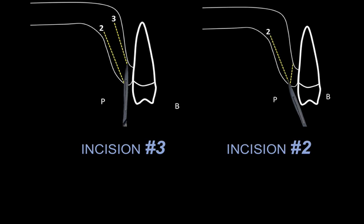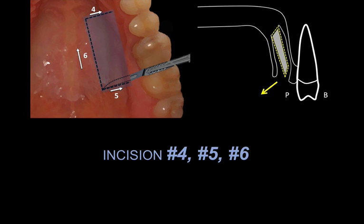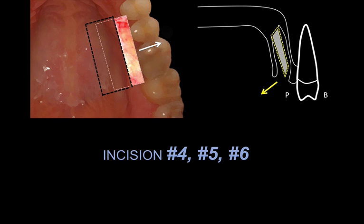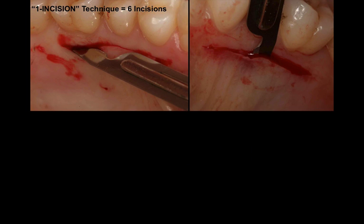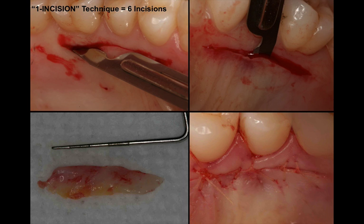So far we have three incisions — the graft is separated superficially and also closer to bone, but it's still held up mesiodistally and apically. These are addressed by the remaining three incisions. Through incision number one, you will make a mesial, a distal, and an apical incision. Following that, you'll be able to pull out your connective tissue graft with cotton pliers and transfer it to the recipient site. So that's six incisions, but we call it the one incision technique because following these guidelines, you end up with a donor site that looks like one incision.